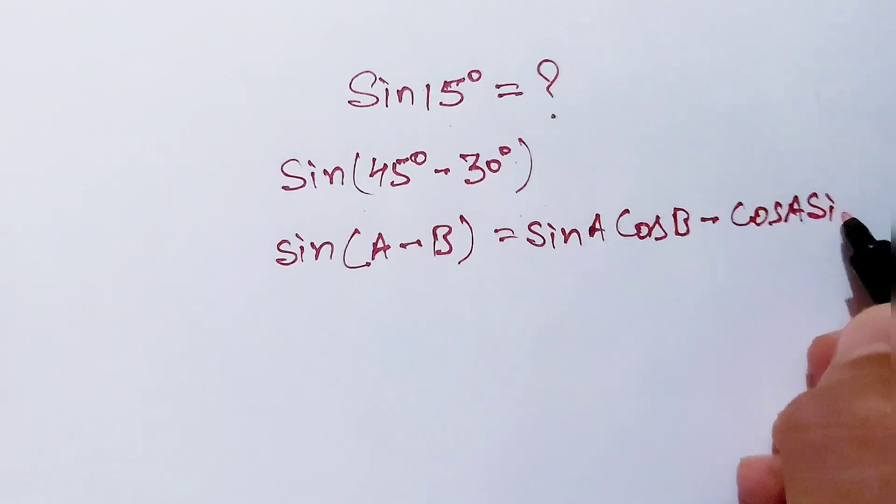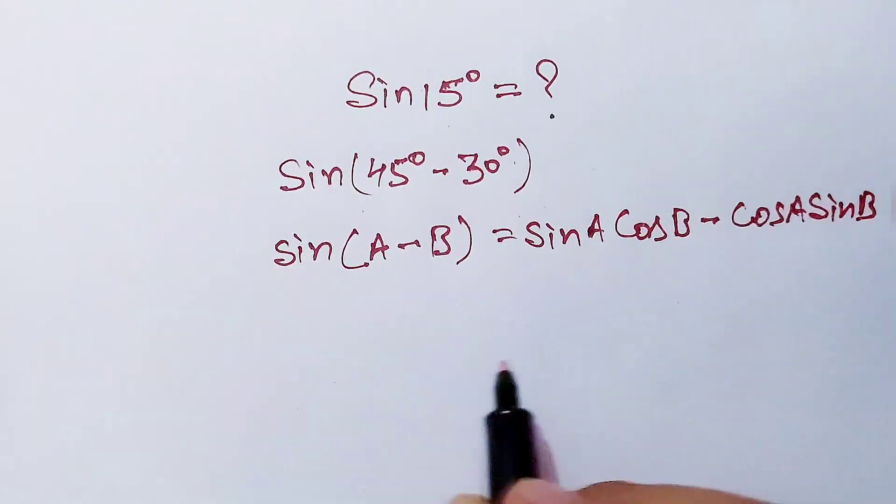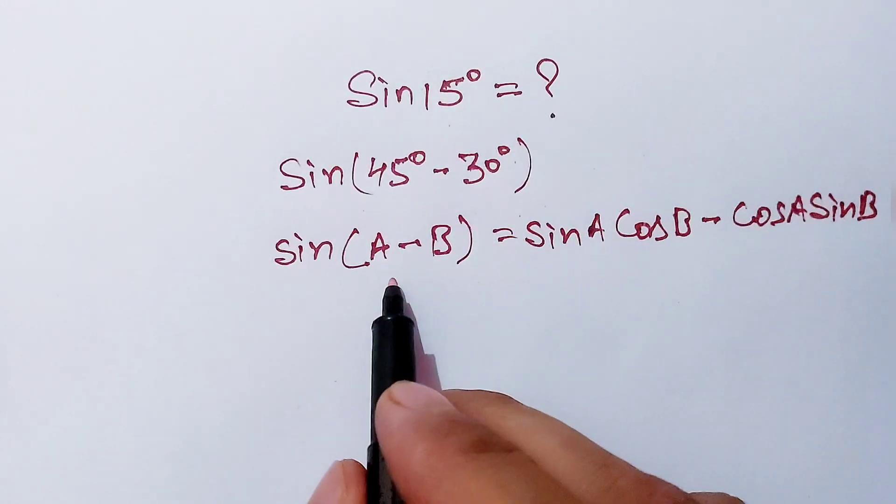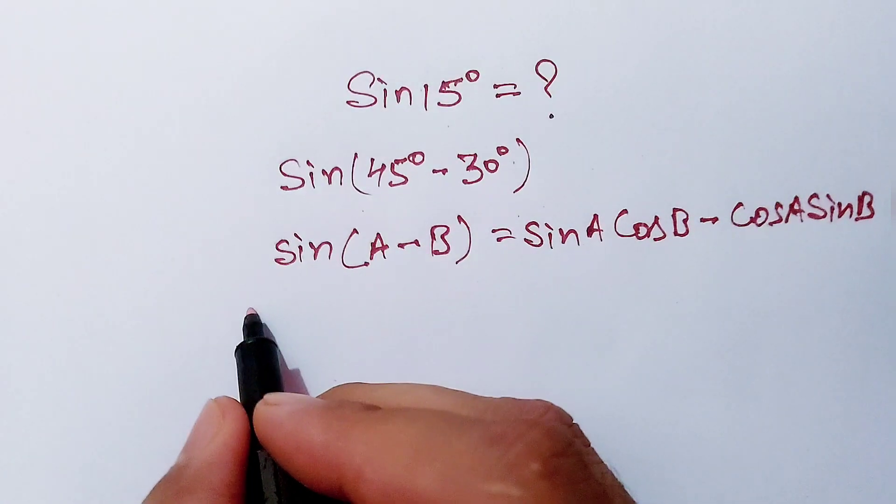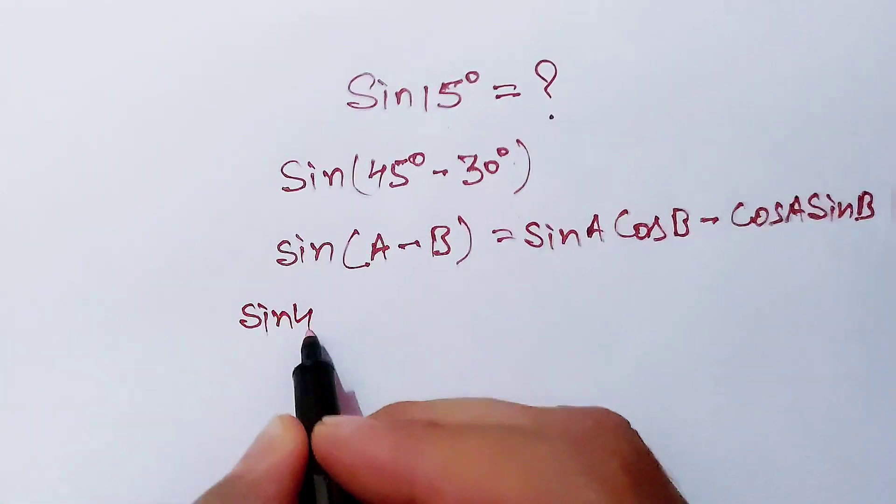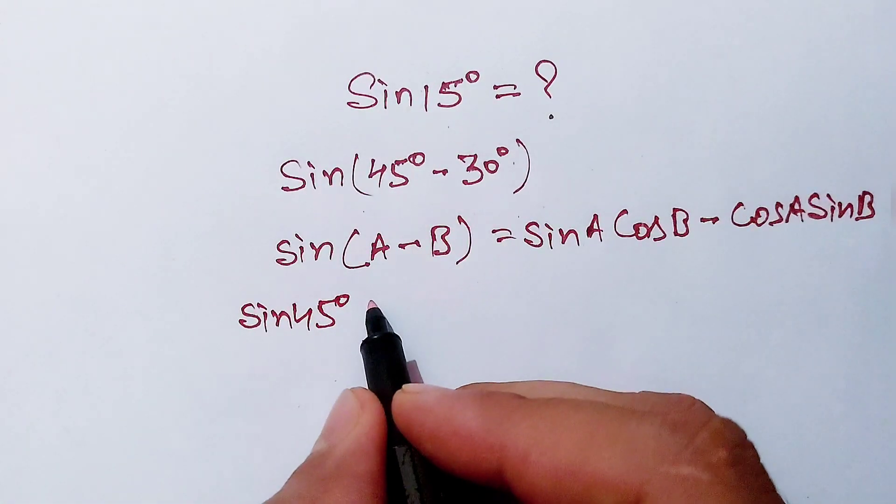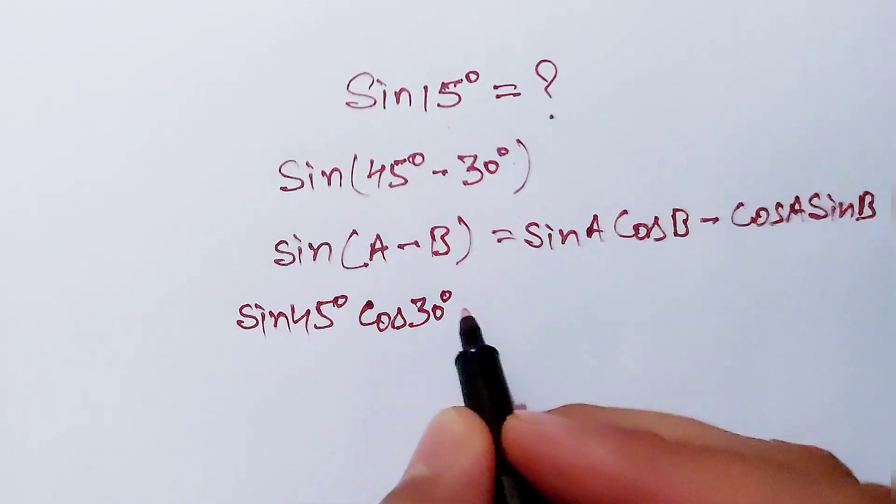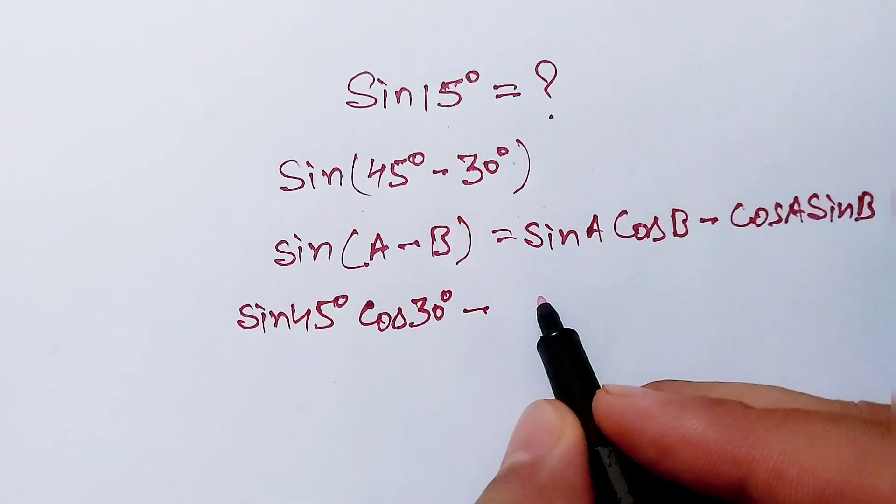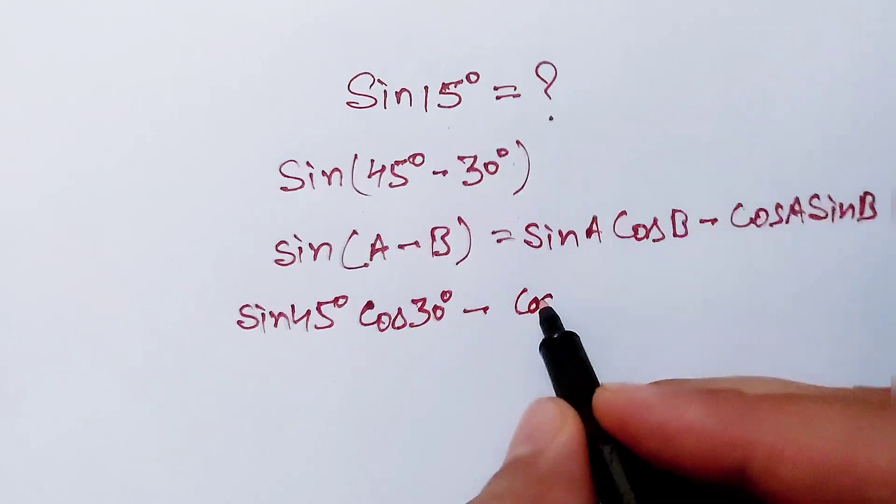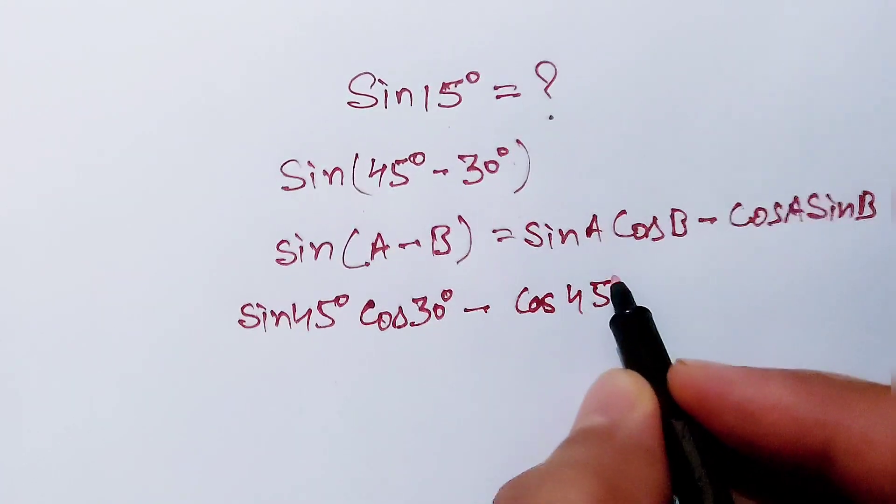So applying this property here, what I get is sine 45 degrees cos 30 degrees minus cos 45 degrees sine 30 degrees.